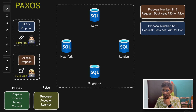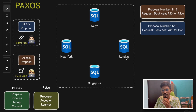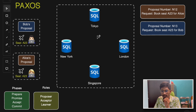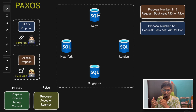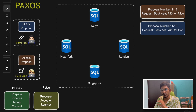Before Paxos, let's understand why we need leader election in distributed systems. Multiple nodes typically need to coordinate efficiently to perform a particular task. Using a leader ensures that only one node makes critical decisions, and it also enables the entire system to avoid conflicts that may arise.